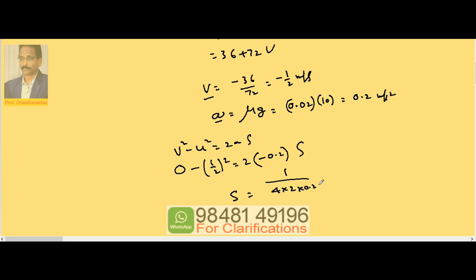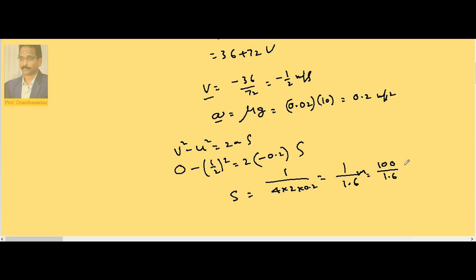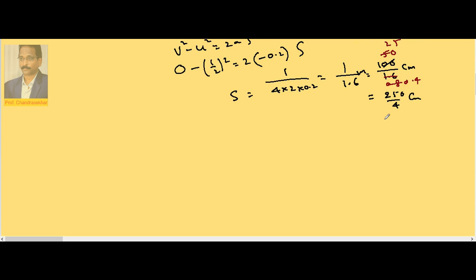So it is 1 by 1.6. This is in meters, so 100 by 1.6 centimeters. Therefore this is 50 by 0.8, which is 25 divided by 0.4, or 250 by 4 centimeters, which is 62.5 centimeters.